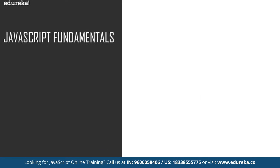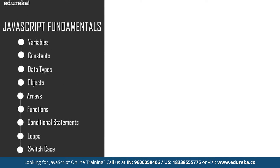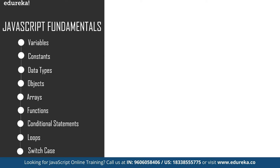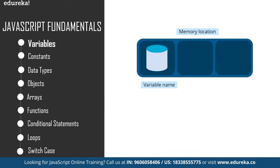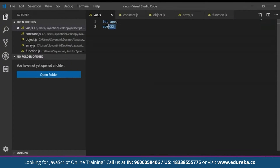Now let's cover some basic fundamentals of JavaScript. These include variables, constants, data types, objects, arrays, functions, conditional statements, loops, and switch case. A variable is a name given to a memory location which acts as a container for storing data temporarily — nothing but reserved memory locations to store values. To declare a variable in JavaScript, we use the let keyword. For example, you write 'let h;' and then provide the value for that variable.